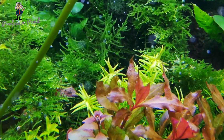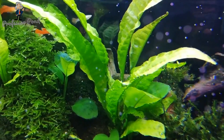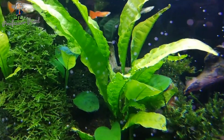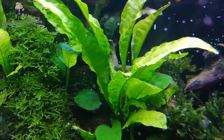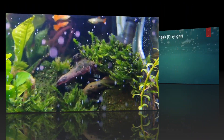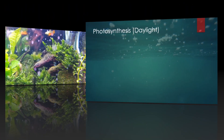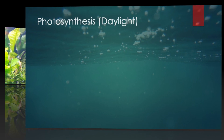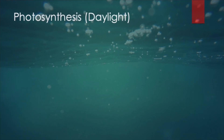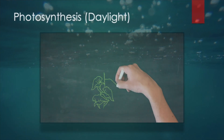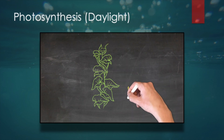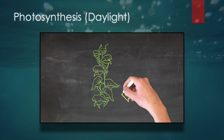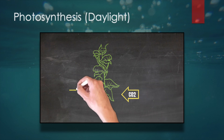In indoor conditions this process depends on the availability of a light source. This is where the importance of lighting comes into play. Water plants have the ability to absorb carbon dioxide, CO2, and convert it into oxygen, O2, when enough light is available. This process works quite effectively and helps you maintain a healthy level of dissolved oxygen in your tank or pond.